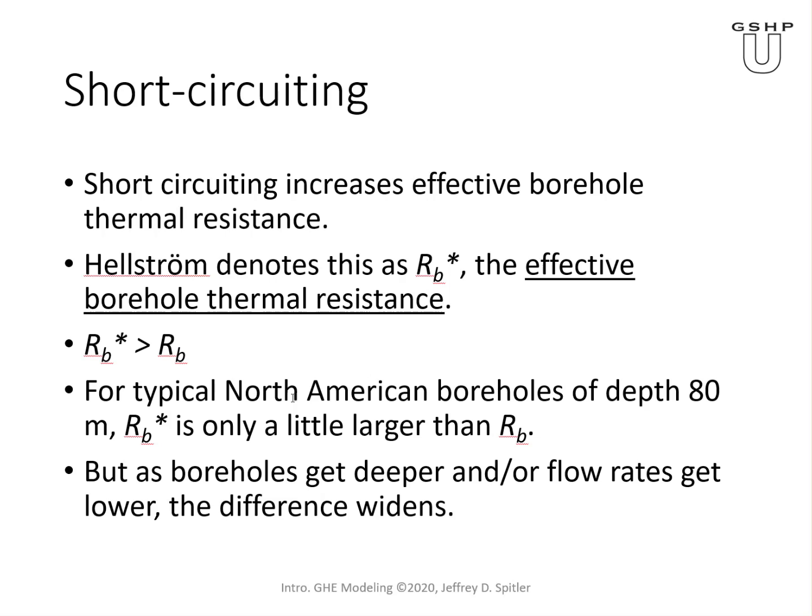In addition to the resistance between the fluid and the borehole wall, there's also the possibility for conduction of heat from the hot side of the tube to the cold side — we refer to that as short-circuiting. One way to look at it is that it increases the effective borehole thermal resistance. Jorn Hellstrom called this RB star, the effective borehole thermal resistance. Generally speaking, RB star is always greater than RB.